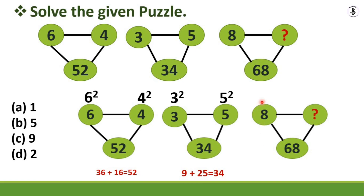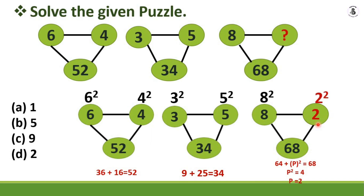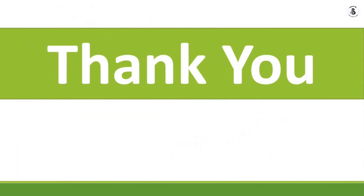For the third pair, 8 squared equals 64. Let the unknown value be p. Then 64 plus p squared equals 68, so p squared equals 68 minus 64 equals 4, meaning p equals 2. Putting 2 in satisfies the condition: 64 plus 4 equals 68. The final answer is 2 — option D. I hope you understood; if you liked this, please subscribe and share. Thank you.